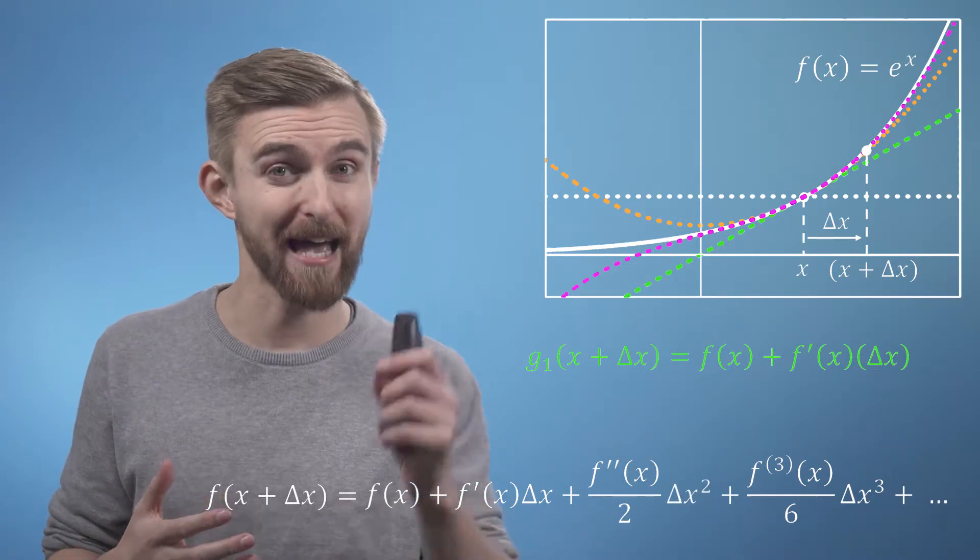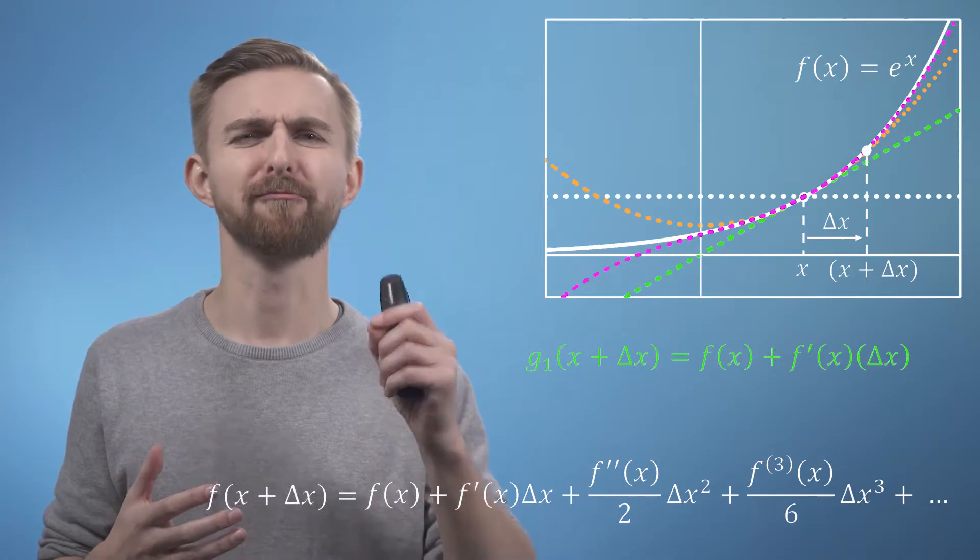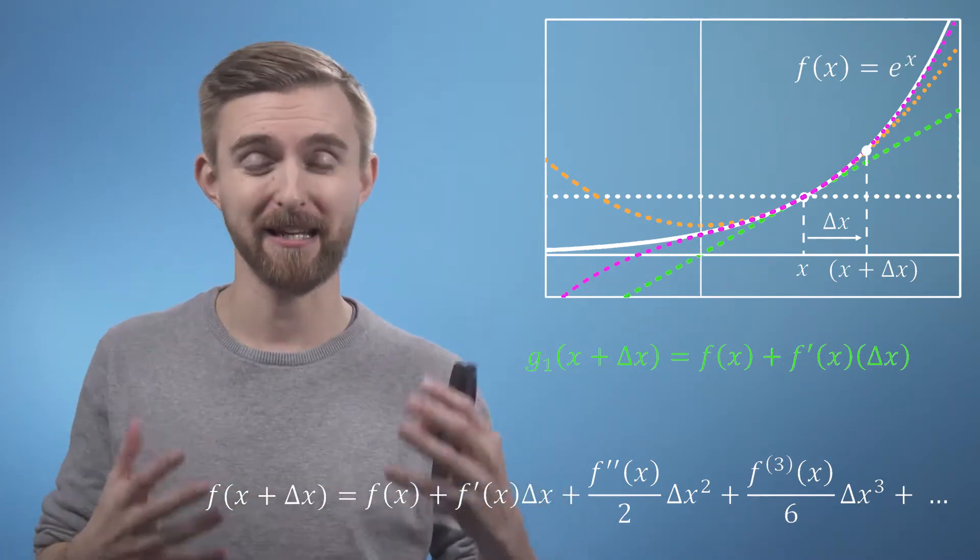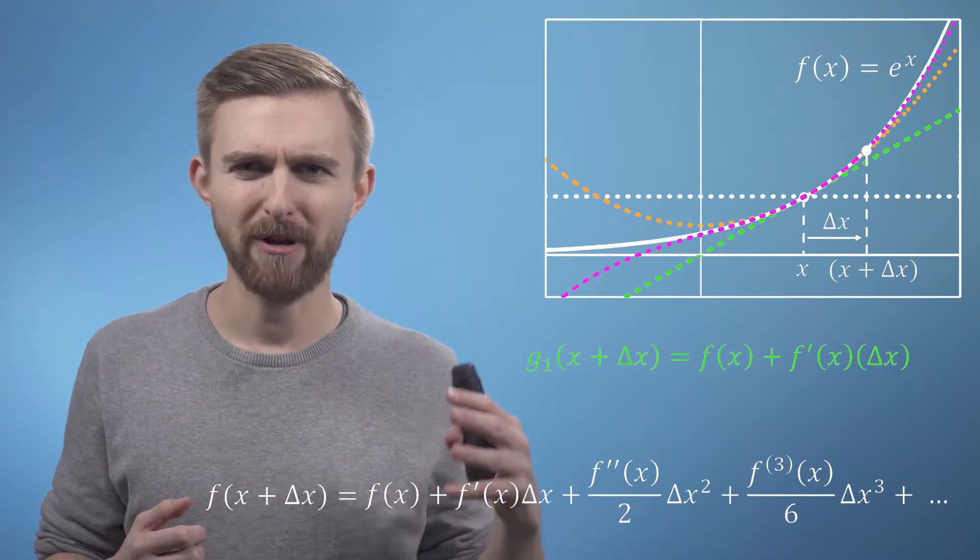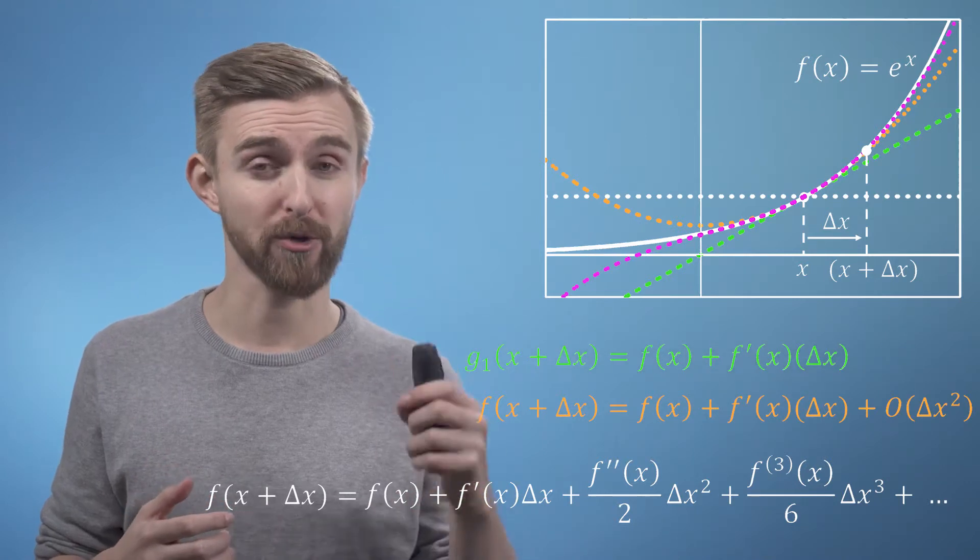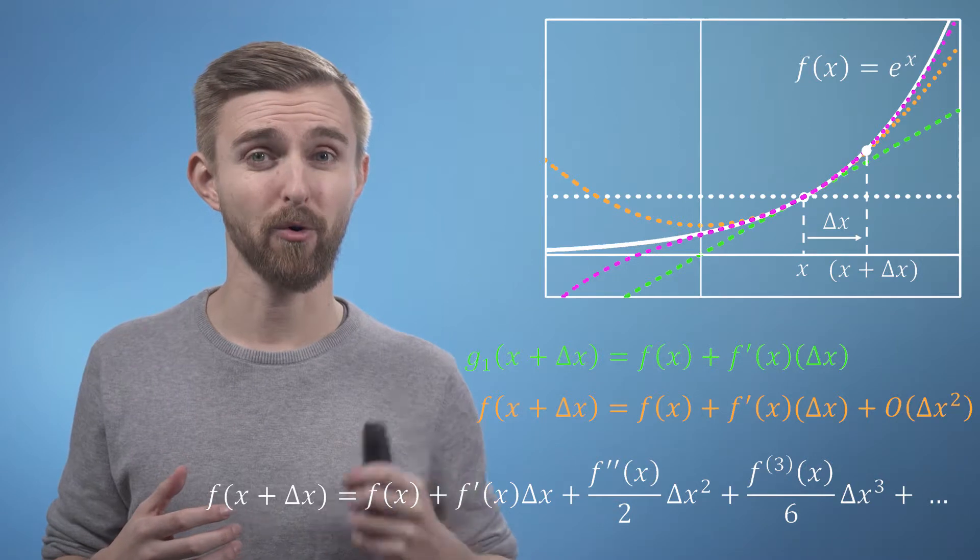This means that if we can say that delta x is a small number, then delta x squared must be a really small number, and similarly delta x cubed must be a ridiculously small number. So we can now rewrite our first order approximation to include an error term which we just say is on the order of delta x squared, or equally that it is second order accurate.